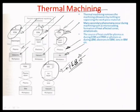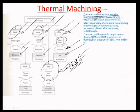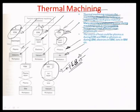In general, there are fundamental principle-based differences between all the machining processes. Thermal machining removes the machining allowance by melting or vaporizing the workpiece material, and many secondary phenomena occur like micro cracking of surfaces, formation of heat affected zones, and striations. The source of heat could be plasma (as in EDM), photons (as in LBM), electrons (as in e-beam), or ion beam machining.